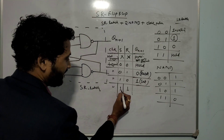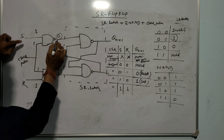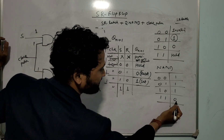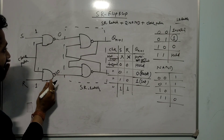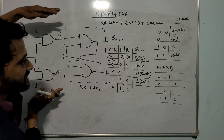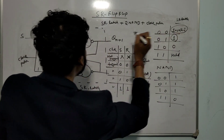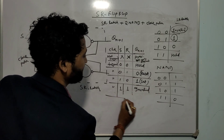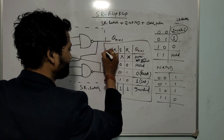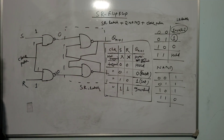Now S=1, R=1. Here 1,1 is given to the NAND gate — output is 0. Similarly, here output is also 0. So 0,0 is given to the SR latch. From the SR latch table, input 0,0 gives output: invalid. So the output is invalid.